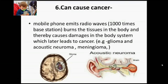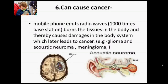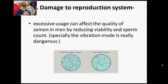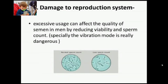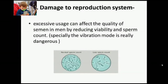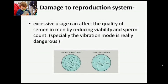Using a mobile phone causes many harmful radiation emissions which can cause different types of diseases, the main one being cancer. The next disease caused by mobile radiation is damage to the reproductive system — excessive use can affect the quality of semen in men by reducing viability and sperm count.